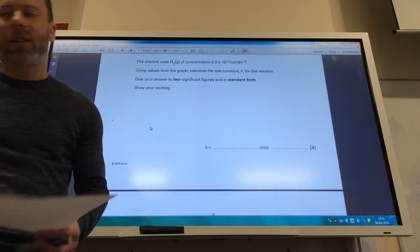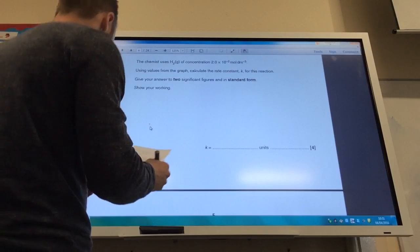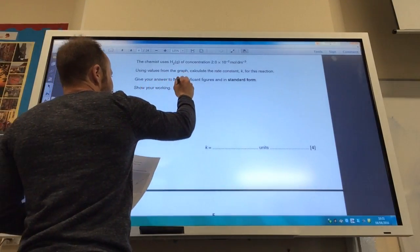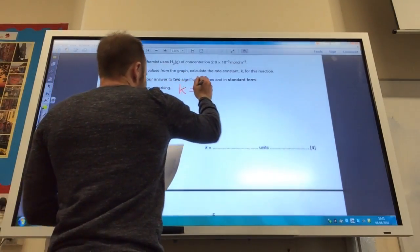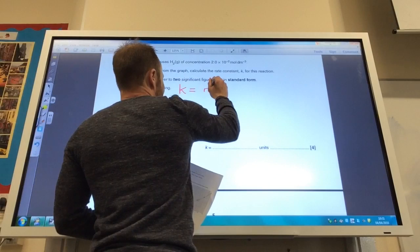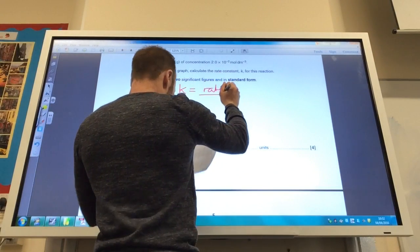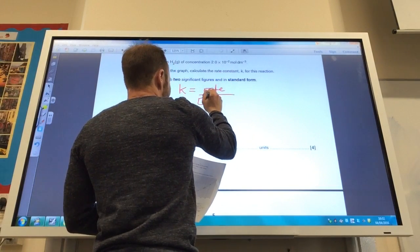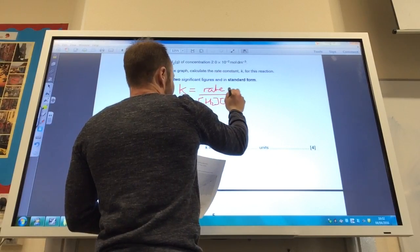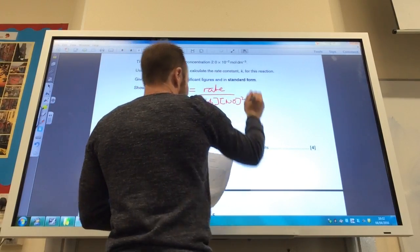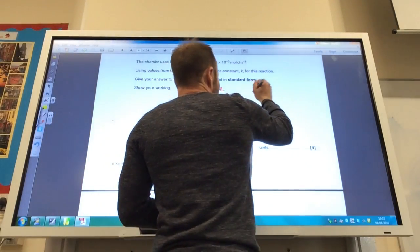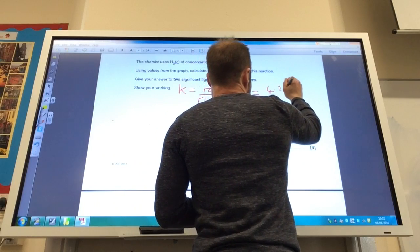So let's put those values into the equation. First of all, we have to rearrange it. So K is equal to the rate divided by the concentration of H2 times the concentration of NO squared. You plug your numbers in that you've got from the graph.